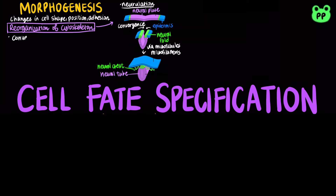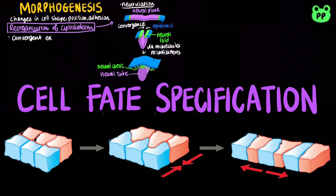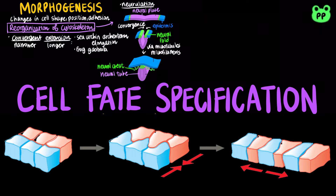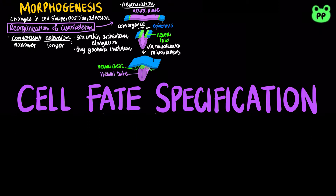Reorganization of the cytoskeleton also drives convergent extension, a morphogenetic movement in which cells of a tissue become narrower and longer, which plays a role in the elongation of the archenteron in sea urchin and the elongation of the gastrula in frogs.